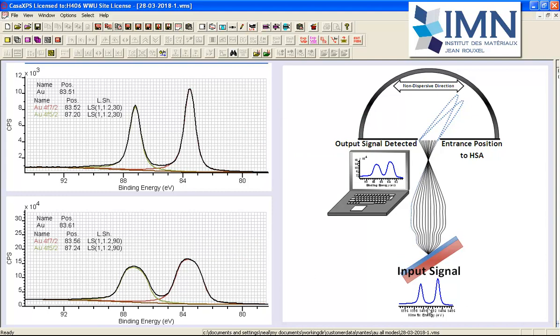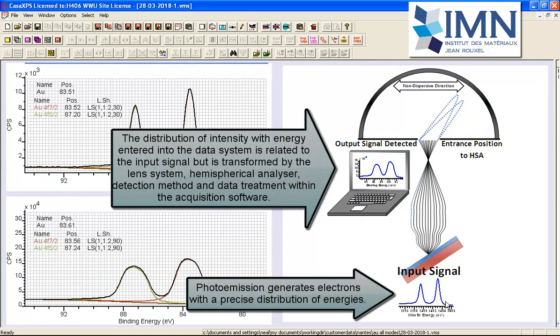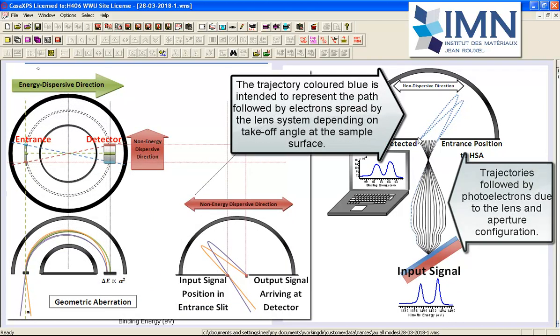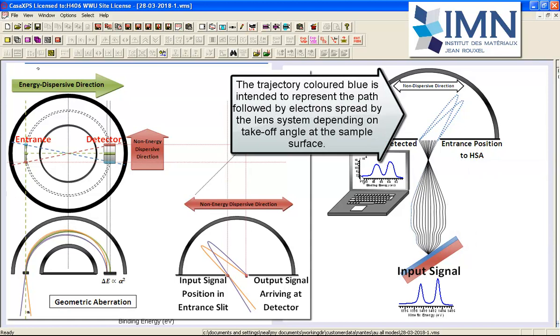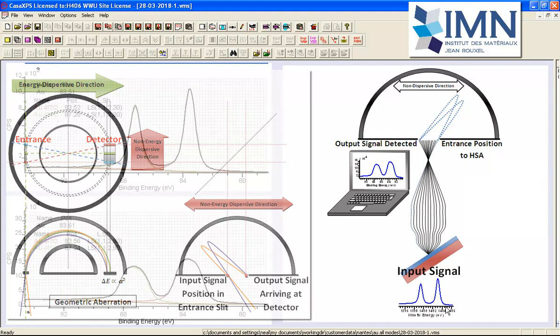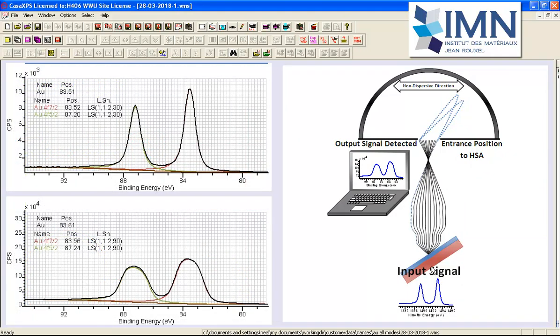So we'll start off by considering what happens with an XPS signal. Underlying any measurement there is a signal and a shape for that signal in terms of peaks and the background. And these are transferred from the sample through the lens system and then around the hemispherical analyzer to a detector and onto the data system where the data are recorded. We end up with a spectrum which has characteristics of both the underlying signal and the instrument itself and how this signal was transferred through the lenses and onto the detector.